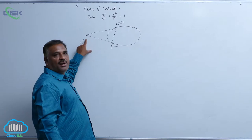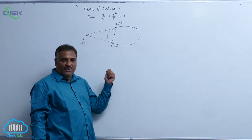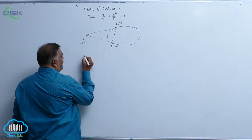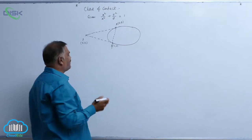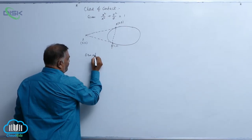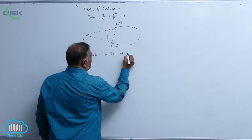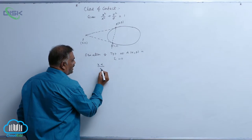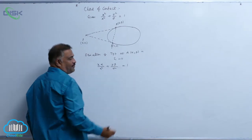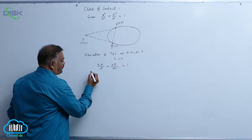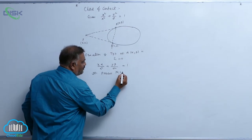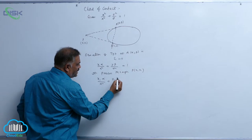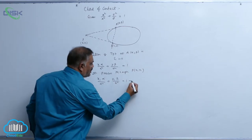Repeating the definition: from external point P(x1, y1), two tangents can be drawn to the given ellipse. The line joining these two points of contact is the chord of contact. Points A(α, β) and B(γ, δ) are points on the ellipse. The equation of tangent at A(α, β) is S1 = 0, which gives: xα / a² + yβ / b² = 1. Since it passes through P(x1, y1): x1·α / a² + y1·β / b² = 1. Call this equation 1.